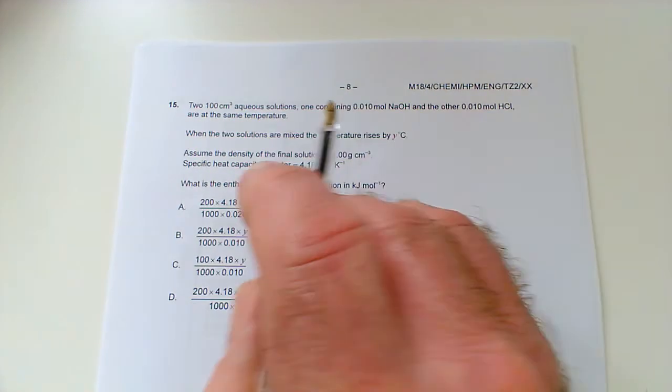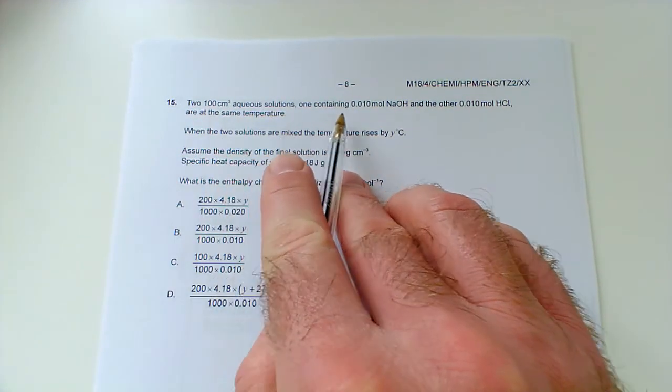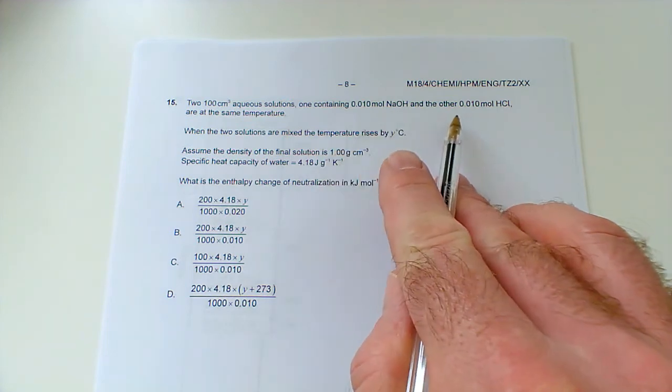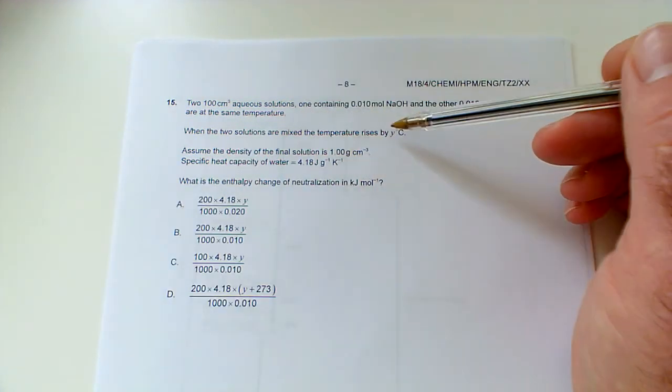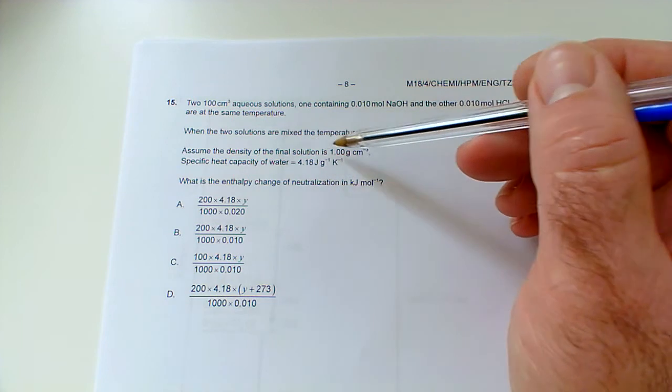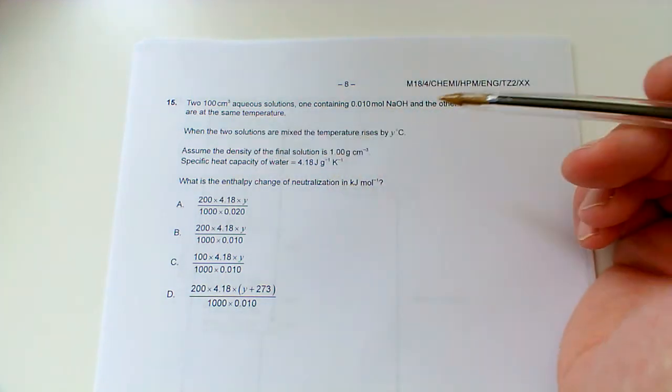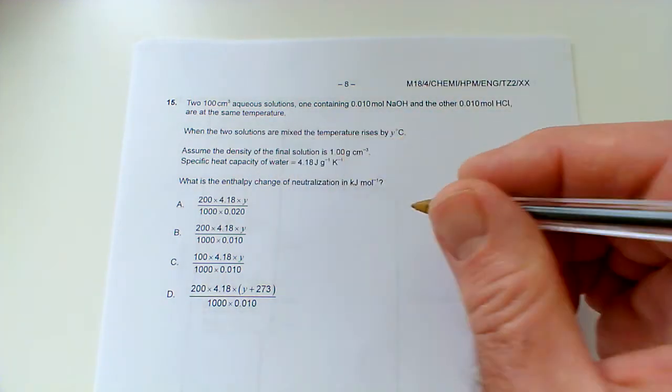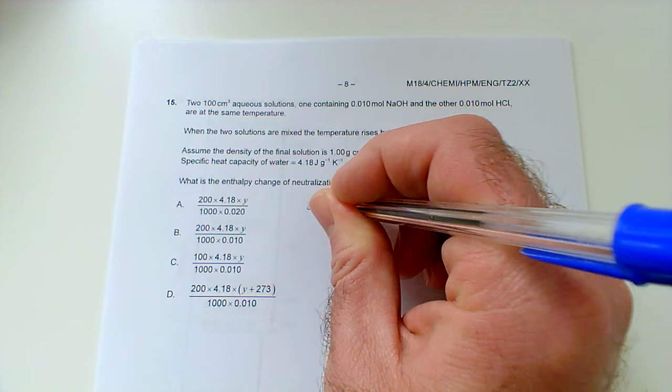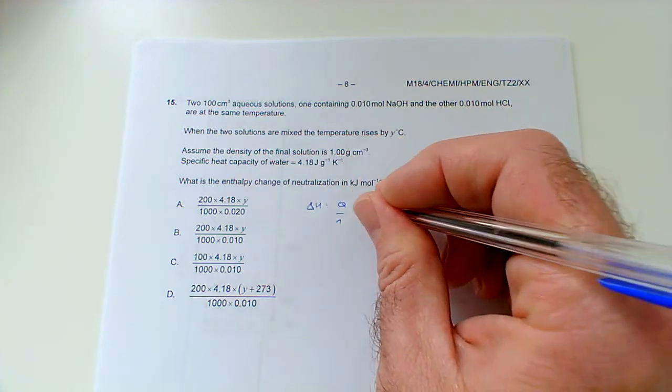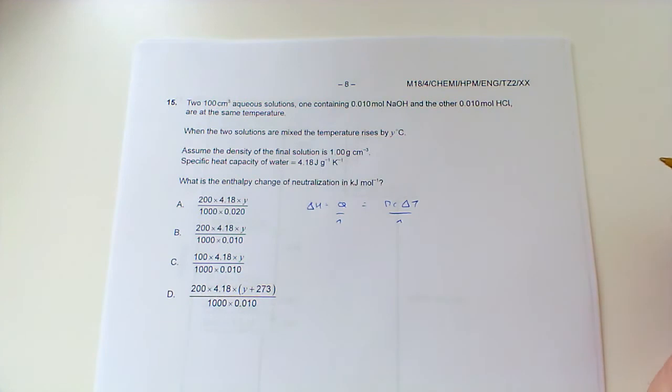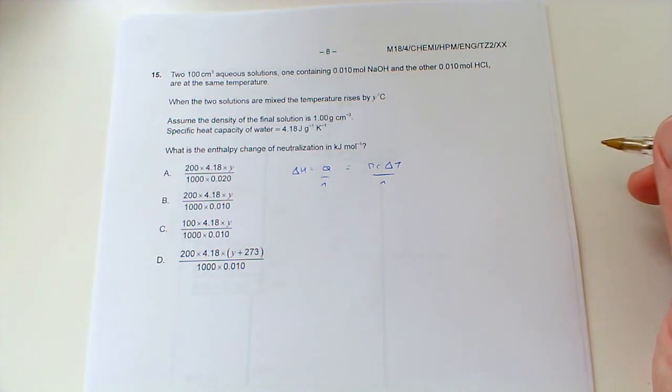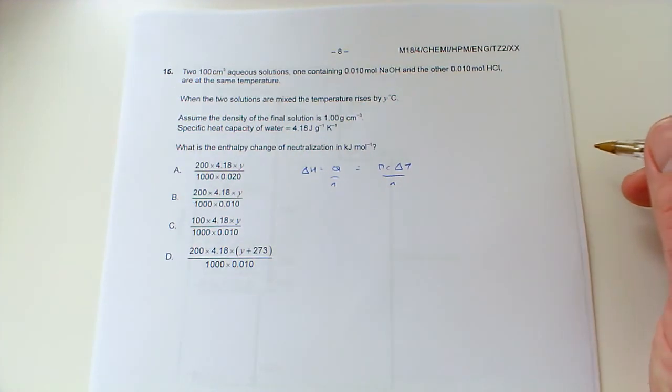Question 15: two 100 cm³ aqueous solutions, one containing 0.01 molar sodium hydroxide and the other 0.01 molar HCl at the same temperature. When the two solutions are mixed, the temperature rises by y degrees C. Assume the density is one, specific heat capacity 4.18. What is the enthalpy change of neutralization? Remember, that's delta H equals q over n, and q is mc delta t divided by... okay.